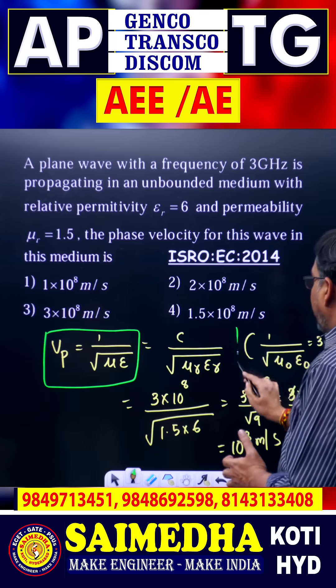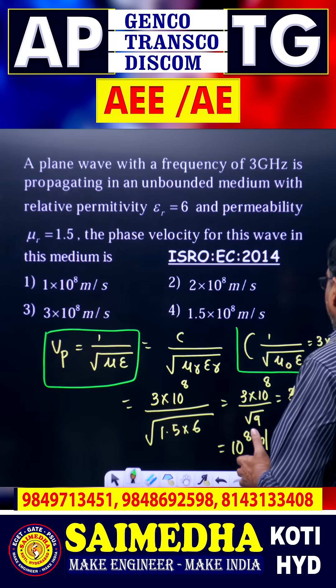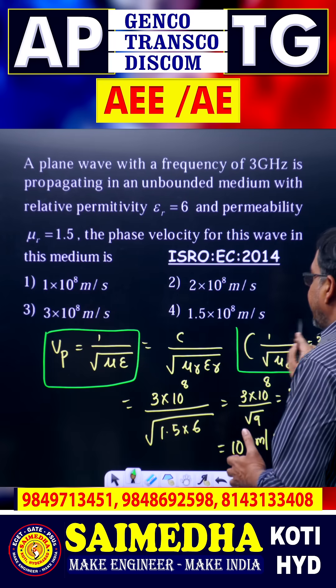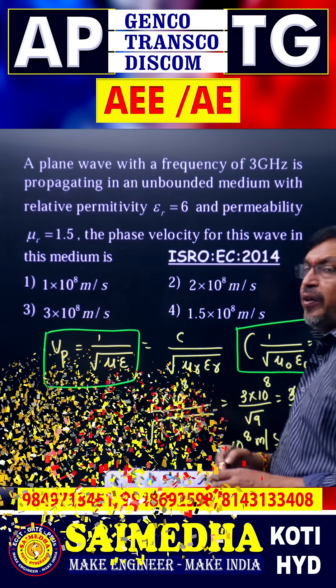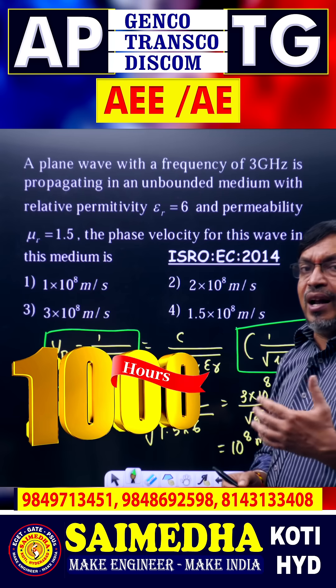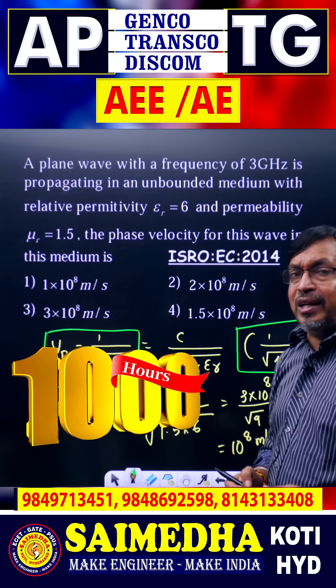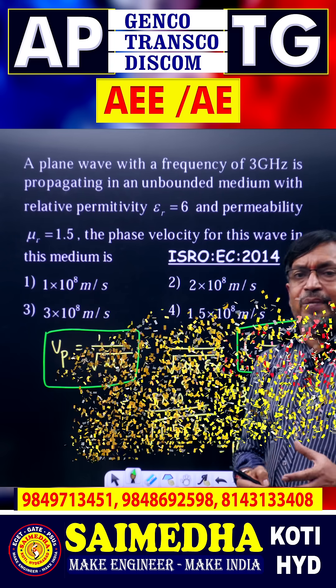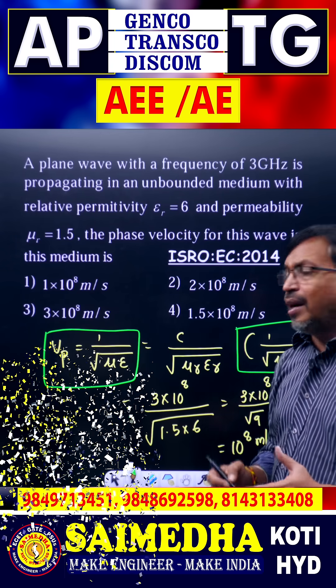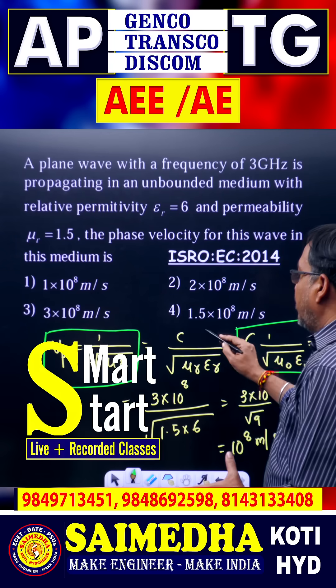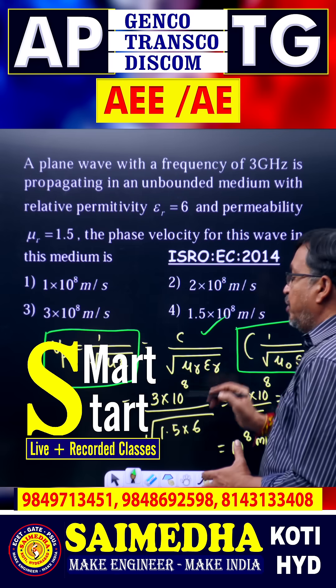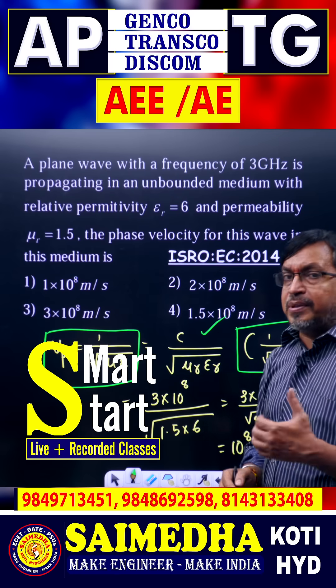We know that 1 divided by the square root of mu naught epsilon naught equals C, that is 3 times 10 to the power 8. So the velocity of wave propagation formula in a dielectric medium becomes C divided by the square root of mu r times epsilon r.